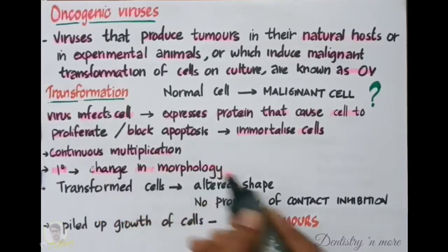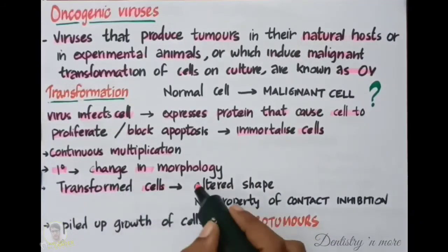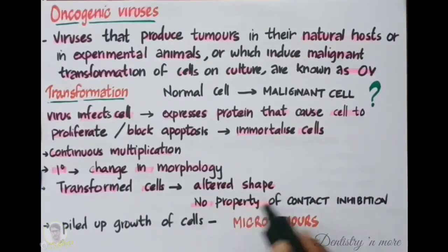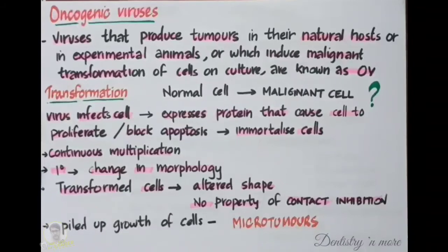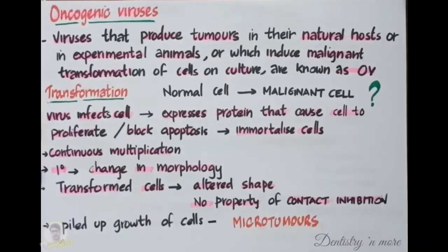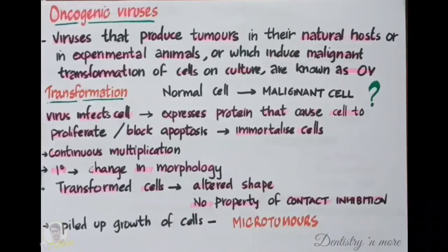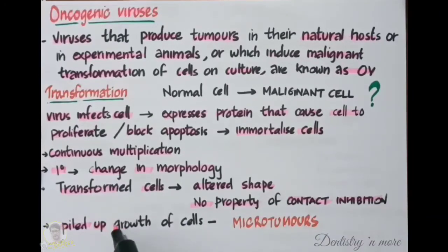The primary change in a transformed cell is the change in morphology. The transformed cells have an altered shape and they lack the property of contact inhibition. Normal cells have contact inhibition which prevents uncontrollable proliferation. Malignant cells lack this property, so cells start piling up, resulting in the formation of microtumors.